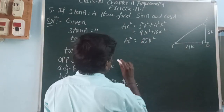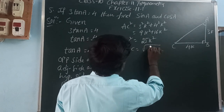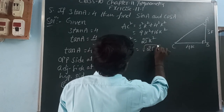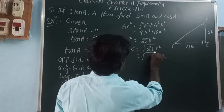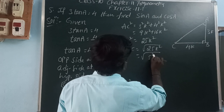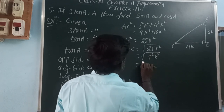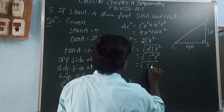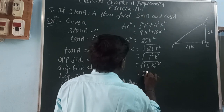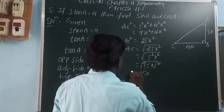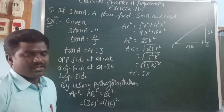Moving the square to the other side gives us a square root. So AC equals the square root of 25k squared. We can write 25 as 5 squared, so AC equals the square root of (5k) squared. The square and square root cancel, giving AC equals 5k.